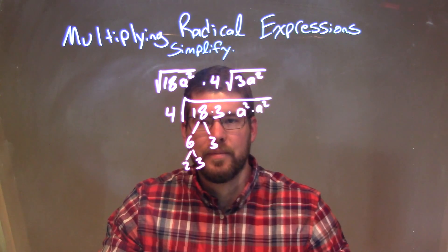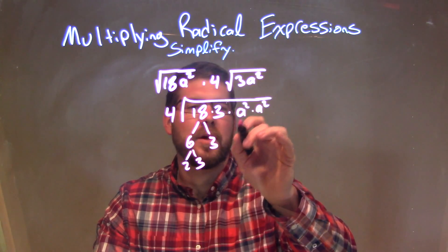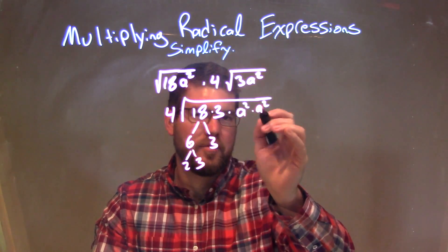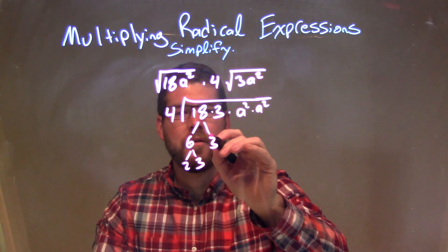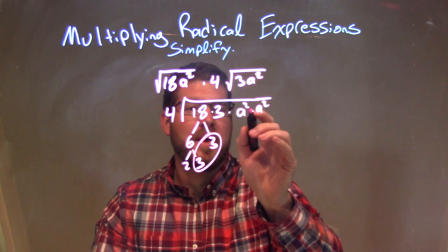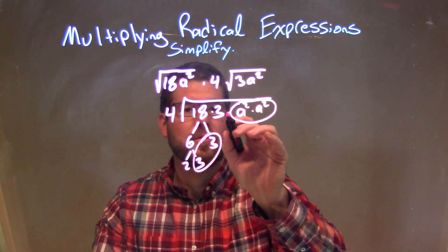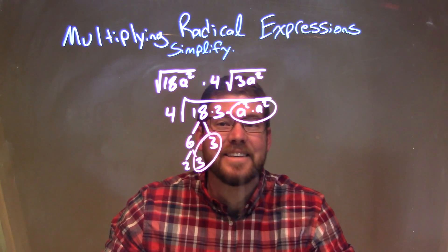All right, so now we can circle our pairs. Normally I break down a², and you can if you want to, but I'm going to do something a little different this time. So we circle our pairs. I have a pair of 3s right here, and I have a pair of a² right there.